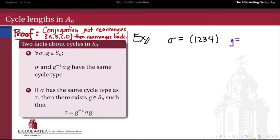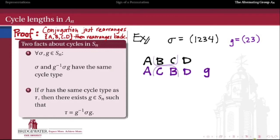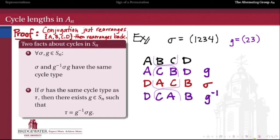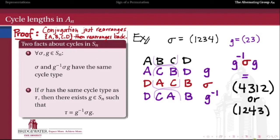For example, take sigma = (1 2 3 4) as a 4-cycle in S4, and let g = (2 3). Computing g⁻¹ sigma g gives the permutation (4 3 1 2), which we can rewrite as (1 2 4 3). The important point is that we started with a 4-cycle and its conjugate is also a 4-cycle. So conjugation in the symmetric group does not change the cycle type of an element.